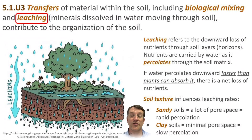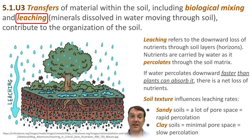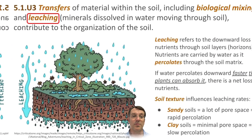Another major transfer in soils is the downward movement of minerals that follows water as it percolates from the soil surface down into deeper layers. This is called leaching — the downward loss of nutrients from the top layers and their transfer into lower horizons. If they go low enough, plant roots can't access them and they are lost to living organisms above.